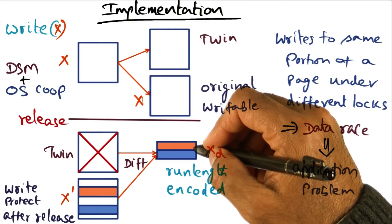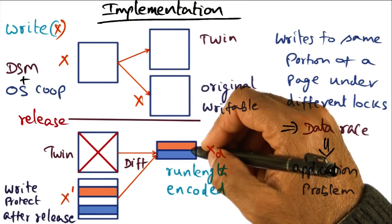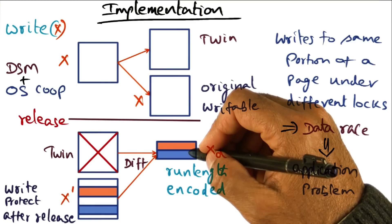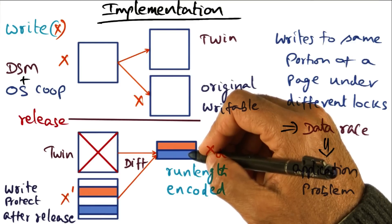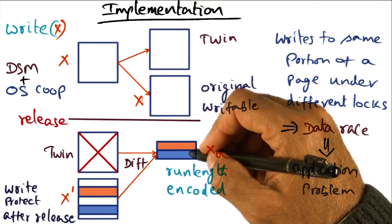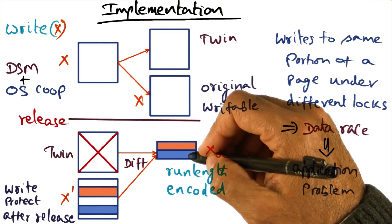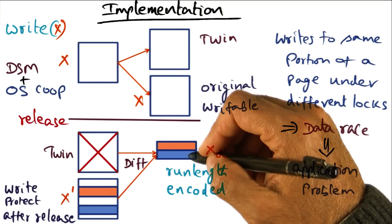Imagine that a page was touched by 10 different processors — in that case there are going to be diffs lying around in 10 different processors. If an 11th processor wants to access that same page, the DSM software has to go and bring the diffs from these 10 prior users of the page, get the original page from the owner, apply the diffs to create the new page — a lot of latency is involved before the processor who needs the page can start using it. There is also a lot of space overhead from all these diffs lying around.